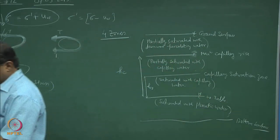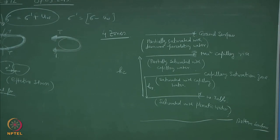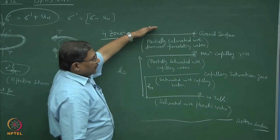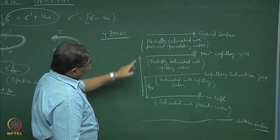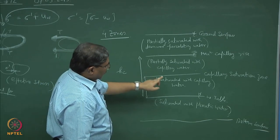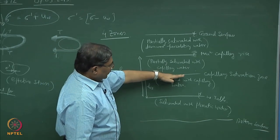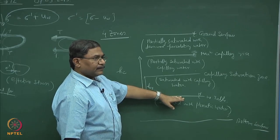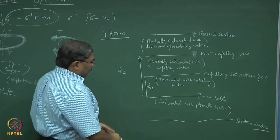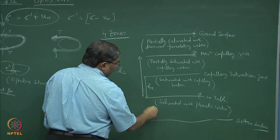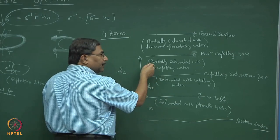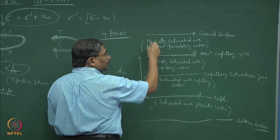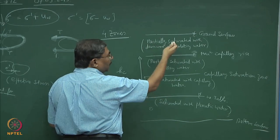Have you understood this? Ground surface, then there is something known as the maximum height of capillary, followed by the capillary saturated zone, then the free water table which is phreatic. Each and every point below the water table is going to be in a positive state of stress. Wherever capillarity comes into picture, it becomes negative. When capillary action ceases, there is no water — it is a dry condition.